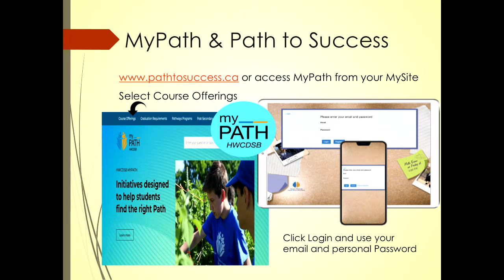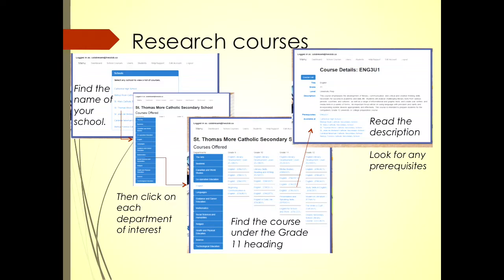It'll take you to the page you're looking at on the right. You can do it either on a desktop or on your phone. Make sure that you log in and use your personal password — then all these pages are accessible to you. You're going to find St. Thomas More School listed, and then all of the departments that we offer courses through will come up. My suggestion is to research every department. We have so many new courses being offered this upcoming year, and as grade 10s, you haven't been exposed to the number of electives you're going to have. Familiarize yourself with all of the courses in each department.